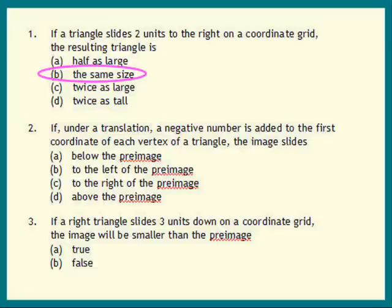If a negative number is added to the first coordinate, the image slides to the left. Last one. The triangle slides down, the image got smaller. Now that is false.